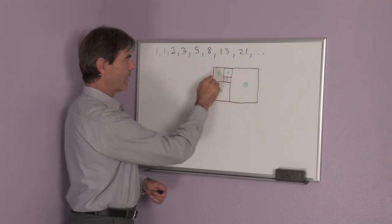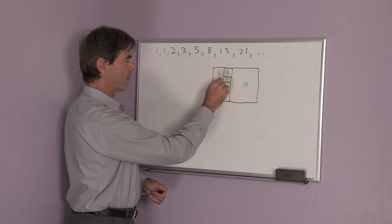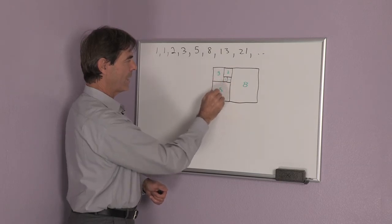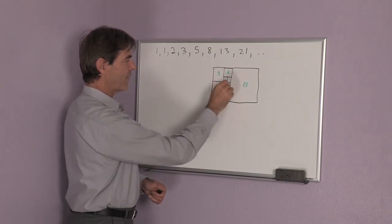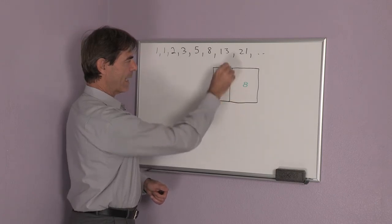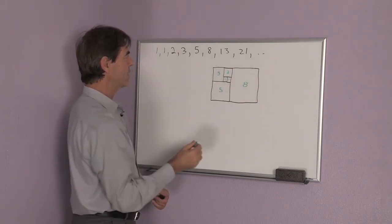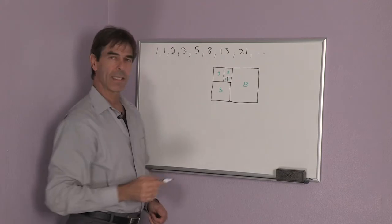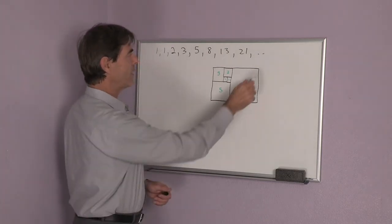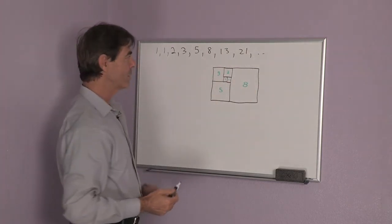And the next square would be a 3 by 3 square. The next square would be a 5 by 5 square. And after that I would have an 8 by 8 square. These are the same numbers in the sequence and I would continue drawing squares.